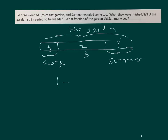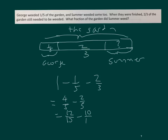So we have one minus one-fifth minus two-thirds. That's equal to four-fifths minus two-thirds. Converting to fifteenths: twelve-fifteenths minus ten-fifteenths, which equals two-fifteenths. Summer weeded two-fifteenths of the garden.